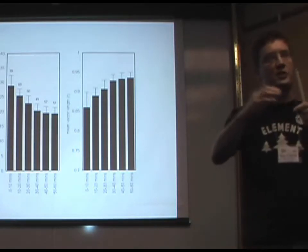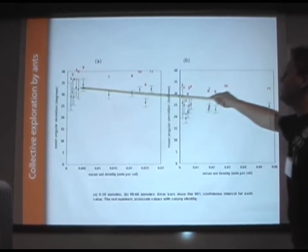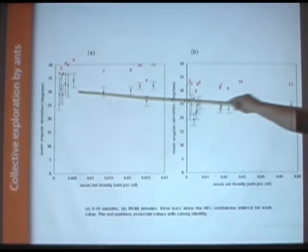Well, I removed the points at which they physically contacted other ants and looked at the turning rates, and there was no difference as the density increased.